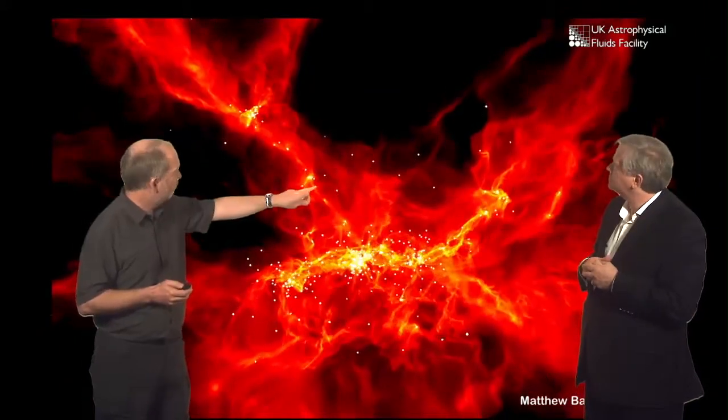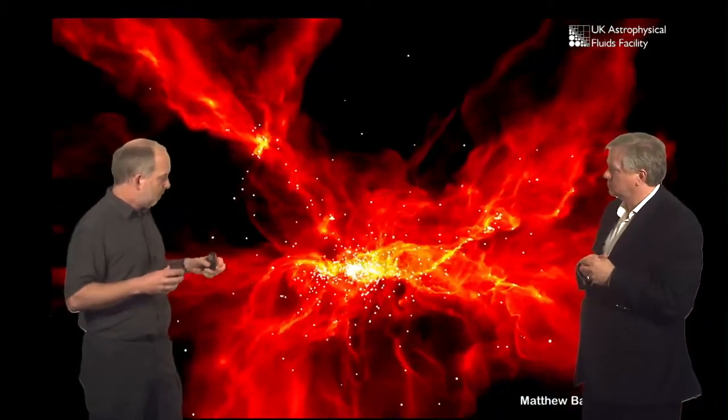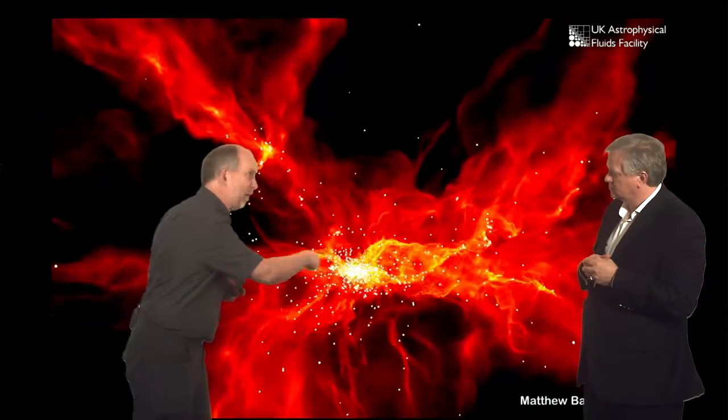So each of these dots probably does have a spinning disk around it, but they're much smaller. The way you get rid of the angular momentum is by having these different dots orbiting around each other.